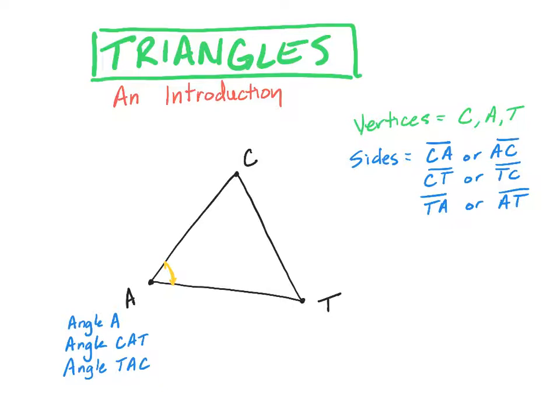Which now means that this angle up here we can call angle C, angle ACT, or you can call it angle TCA. Again, the angle's in the middle. So we can keep on doing that for all the angles here for our triangles.